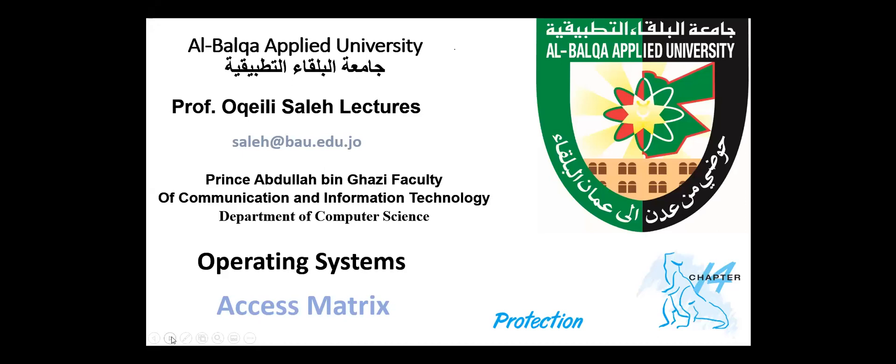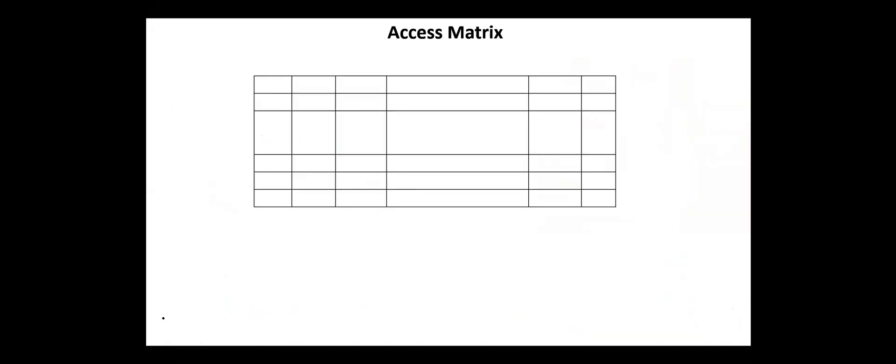Hello again. Today our topic is access matrix. The general model protection can be viewed as a matrix called an access matrix. The rows of the matrix represent domains and the columns represent objects. Each entry in the matrix consists of a set of access rights.